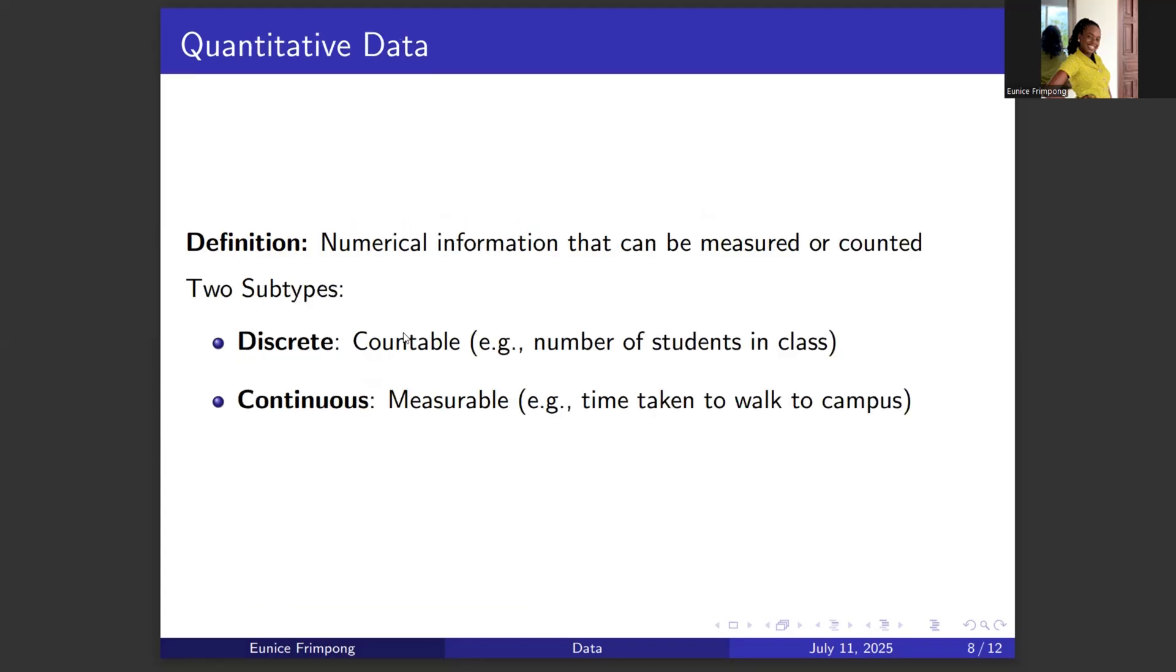The next type of data is quantitative data. This type of data is numerical information that can be measured or counted. And there are two subtypes under quantitative data. The first subtype is discrete. Discrete quantitative data is countable, for example, number of students in a class. This kind of data can be counted. The second subtype is continuous data. This kind of data is measurable. So you cannot count, but you can measure. For example, time taken to walk to campus or the height of an individual or the weight of students in a particular class. These data can be measured, but they cannot be counted.